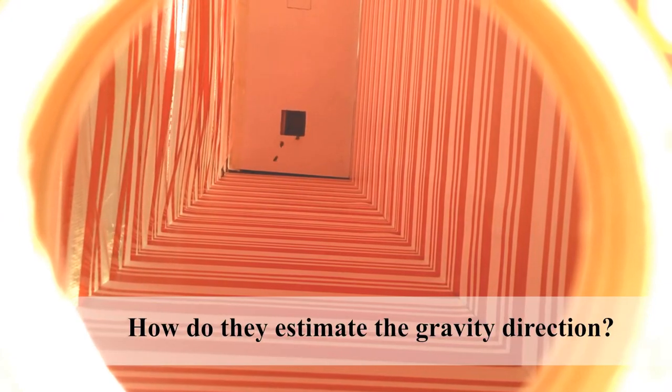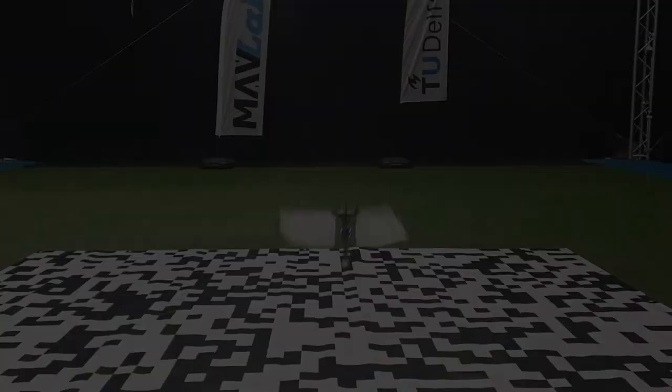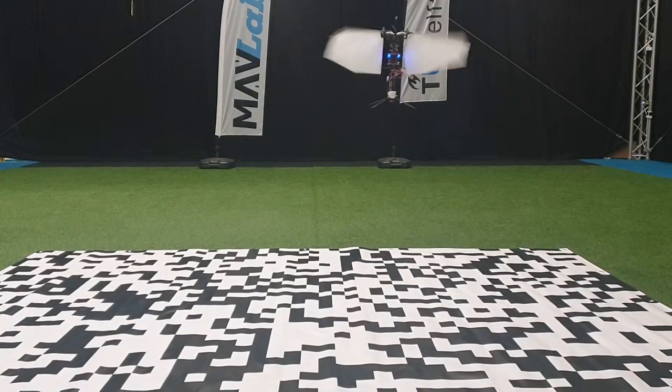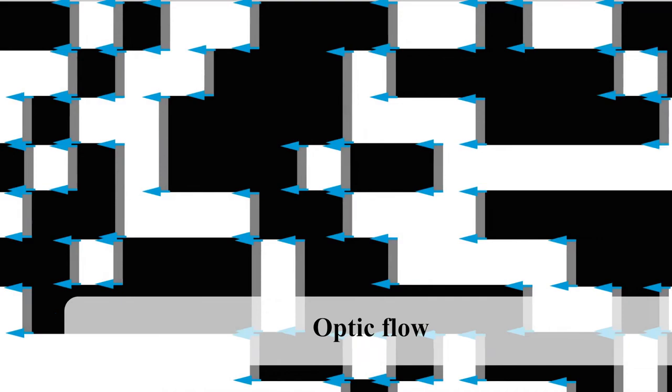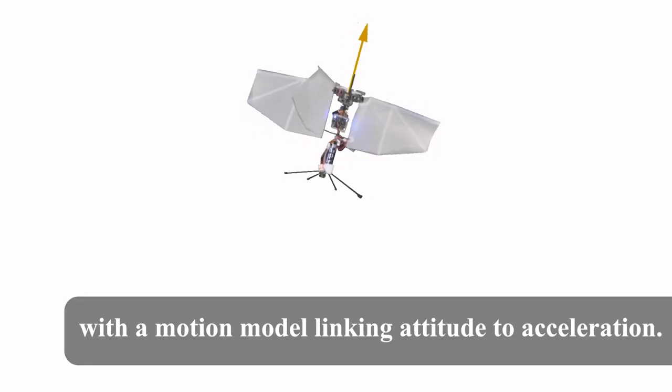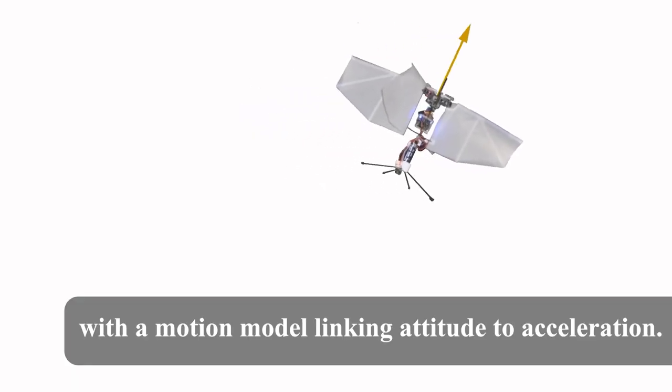How do they estimate the gravity direction? We show that the key is to combine optic flow with a motion model linking attitude to acceleration.